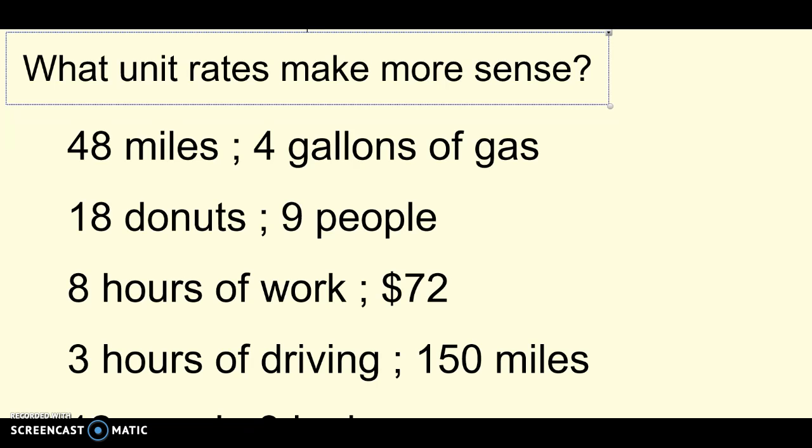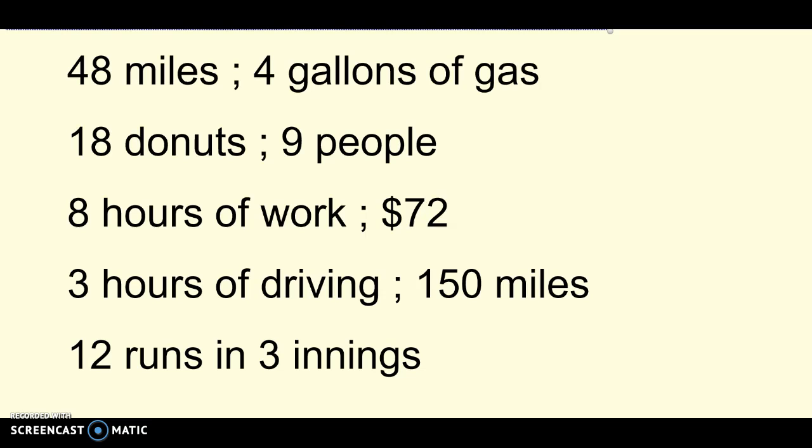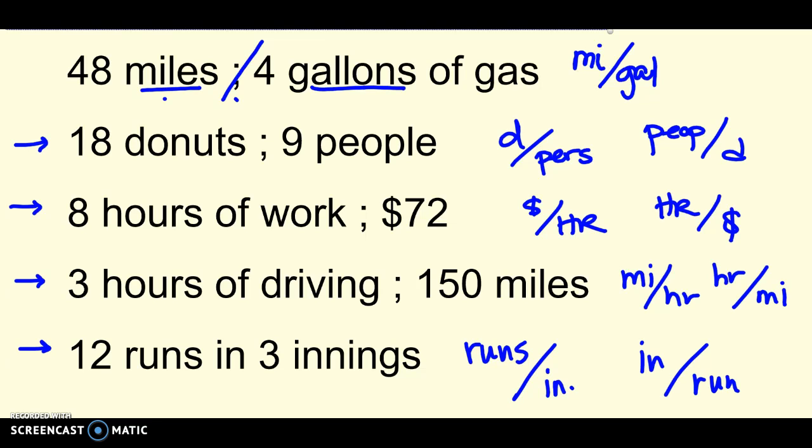Here I'm giving you 5 different rates. Tell me which one would make more sense. For example, miles per gallon or do you think it would make more sense to say gallons per mile? I would say we always talk about how many miles can I go on each gallon of gas. That unit rate makes more sense. Try these - write down the way that you think makes more sense. And then we'll come back and check. So I've written them all out. Let's see which one makes sense. How many donuts per person or how many people per donut? Probably that one. How much money do I make each hour, or how much time do I have to work to earn $1? Probably that one. Miles per hour - that's one we use every day. We don't usually talk about how many hours it takes us to drive one mile. That would be silly. And then how many runs per inning.